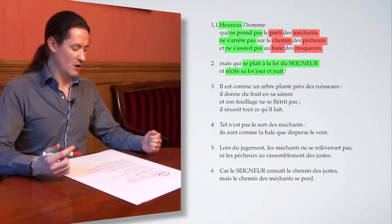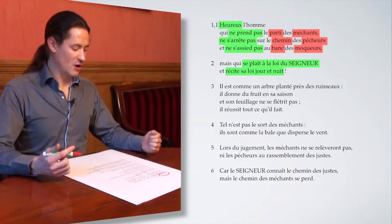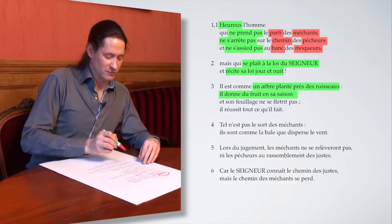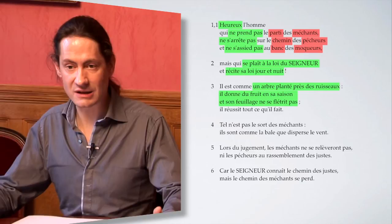Le verset suivant dépeint ce bonheur à l'aide d'une métaphore agricole. On y découvre un arbre. Que nous dit-on sur cet arbre ? On nous dit qu'il est planté près des ruisseaux, qu'il donne du fruit en sa saison et que son feuillage ne se flétrit pas. Voilà qui lui permet de réussir tout ce qu'il fait.